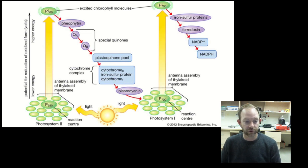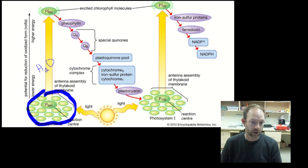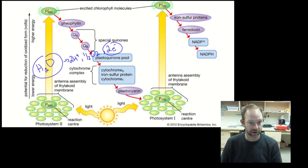One thing to add: where are the new electrons coming from? We just took two electrons from the first photosystem, so electrons must come in to replace them. Those replacement electrons come from a molecule of water. The energy from light not only excites the electrons — it also splits a water molecule into two protons, half of an oxygen molecule, and two electrons. It's those two electrons that replace the ones that left the photosystem after it was struck by a photon.